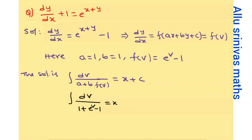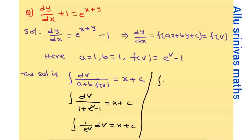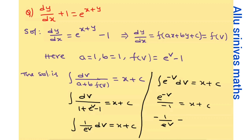Substituting: integral of dv by (1 plus 1 times (e to the power v minus 1)) equals x plus c. Simplifying the denominator: e to the power v minus 1 plus 1 equals e to the power v, so integral of e to the power minus v dv equals x plus c. Integrating: e to the power minus v divided by minus 1 equals x plus c. Substituting v equals x plus y gives the final answer.